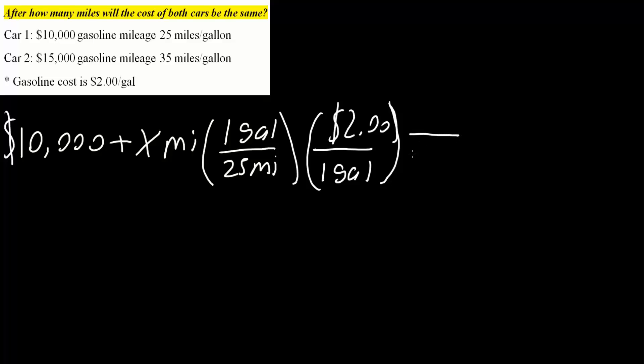So we say equal Car 2. We do the same idea. We say $15,000 plus x miles.